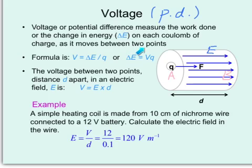here's a D. In an electric field E, these field lines here, is V equal to E times D. And here's an example to illustrate.